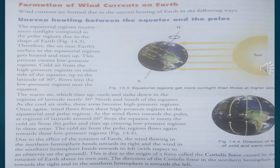There is uneven heating between the equator and the poles. There are two poles — north pole and south pole — and these polar regions get very less sunlight compared to other areas. The equatorial regions receive more sunlight, falling more directly. Therefore, the air near the Earth's surface in the equatorial region gets heated and rises up, because hot air always rises up, and a low pressure area is created.